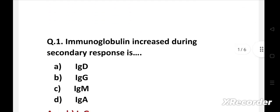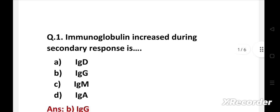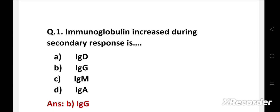Question number one. Immunoglobulin increased during secondary response is: Option A IgD, B IgG, C IgM, D IgA. The right answer is Option B, IgG. During the secondary immune response, the immune system can eliminate the antigen which has been encountered by the individual during the primary invasion. Immunoglobulin increased during secondary response is IgG.